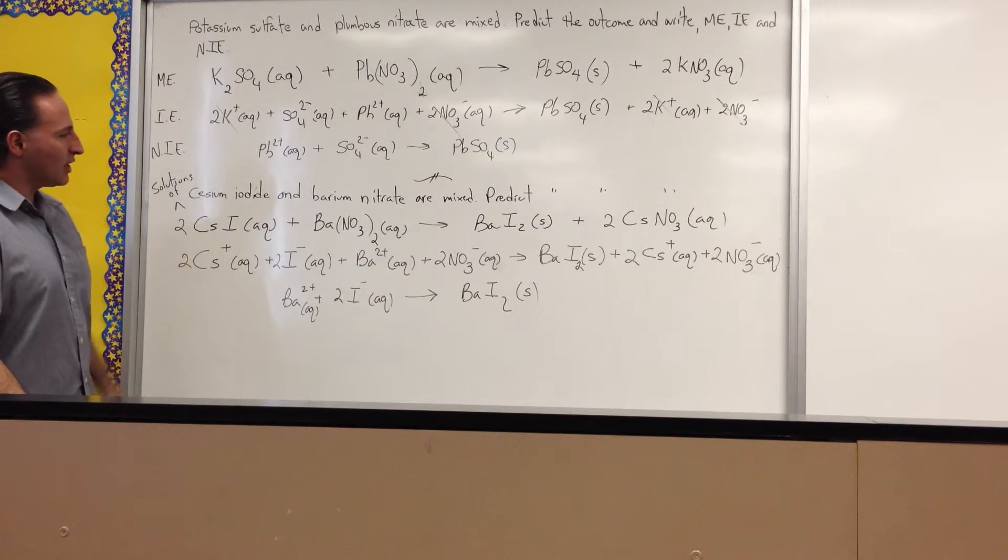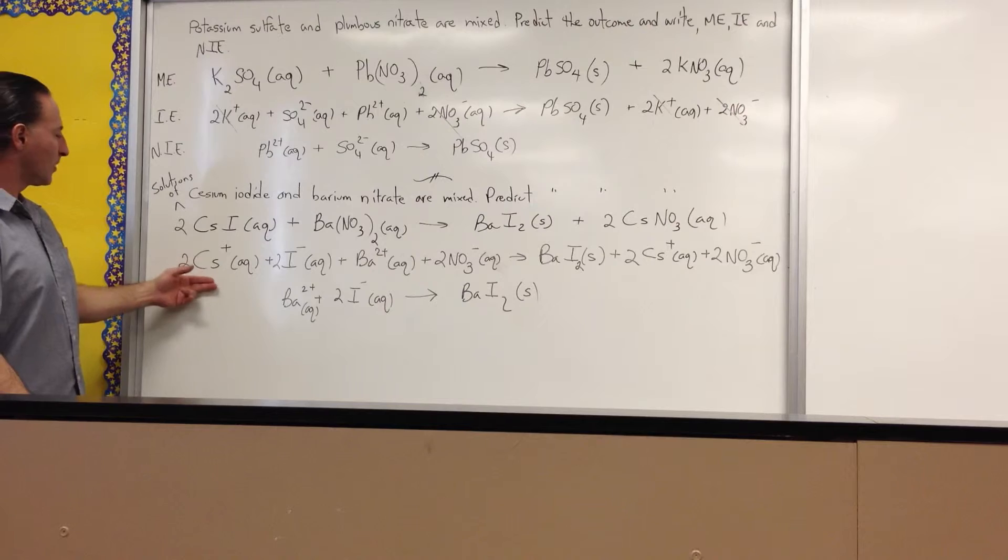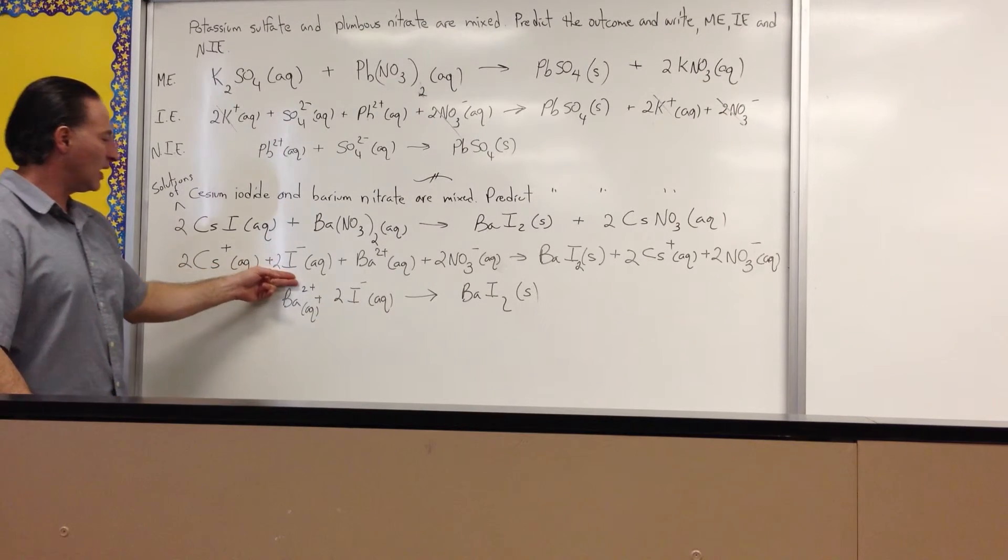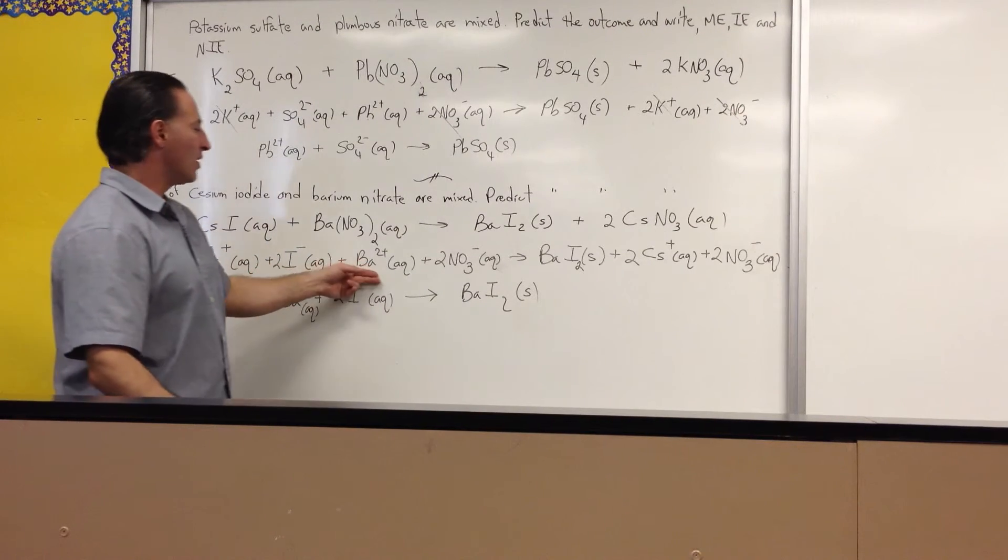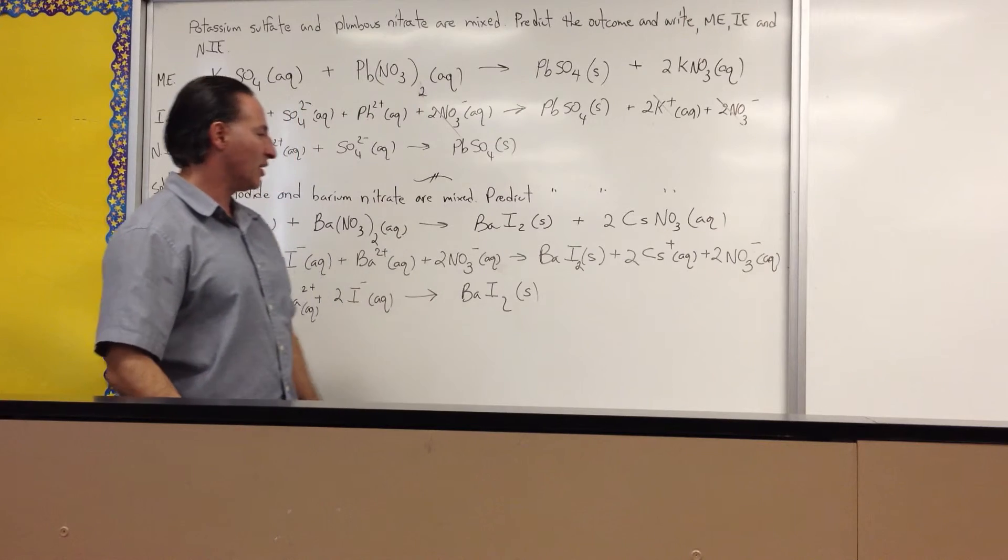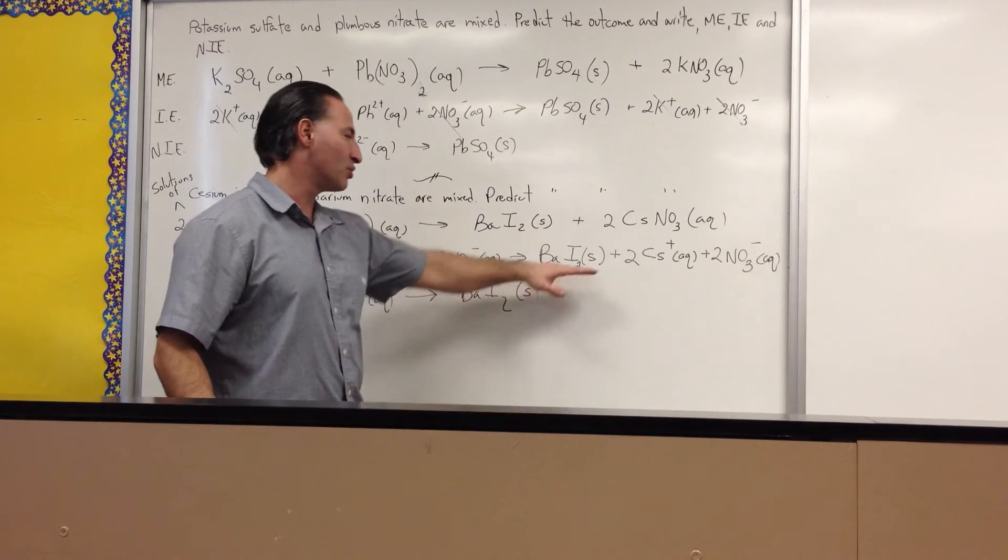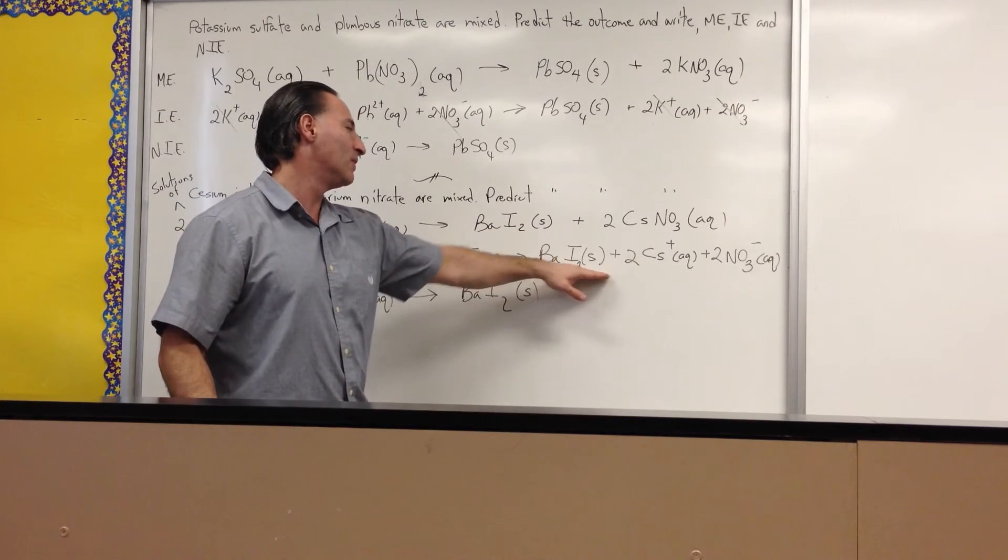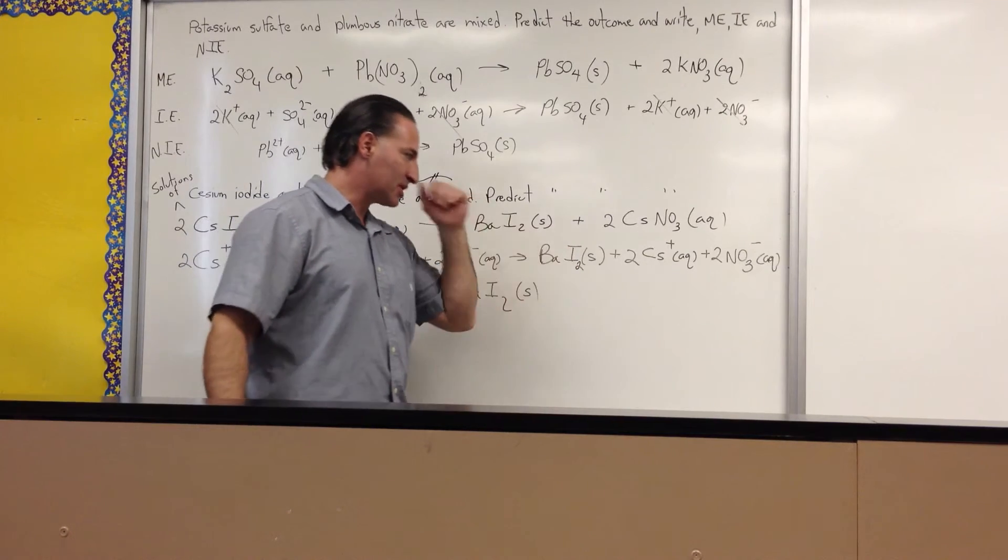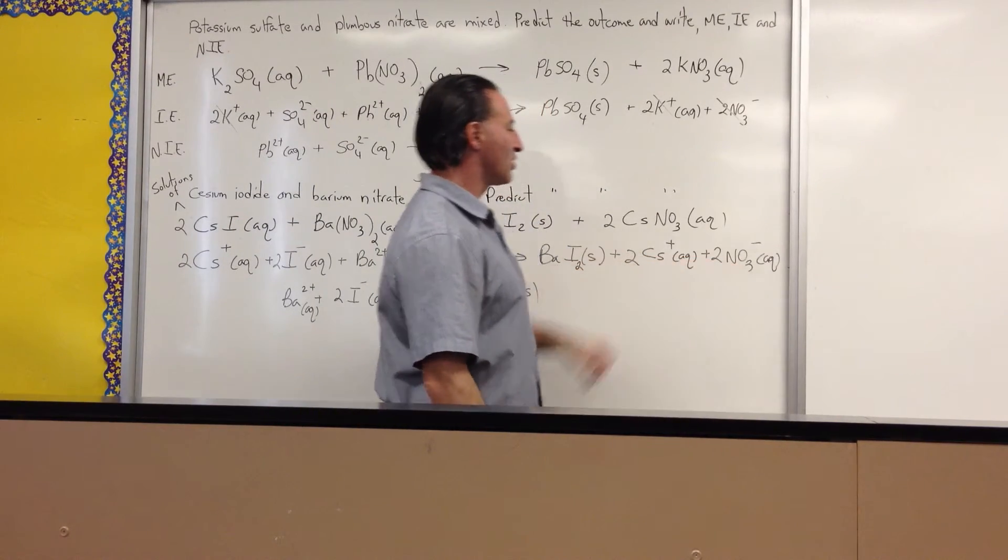To draw the ionic equation, you'll get two cesium cations, two iodide anions, one barium cation, and two nitrate anions. When the two meet in solution, we're assuming this barium iodide is not soluble, forms a solid, and it precipitates. These two are soluble, so they remain in solution.